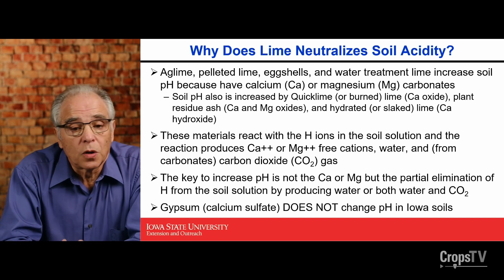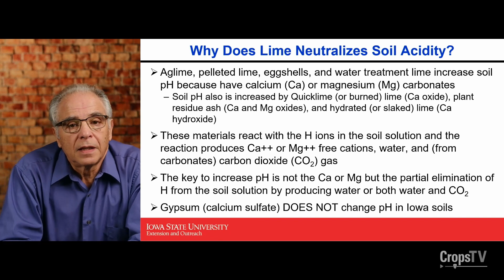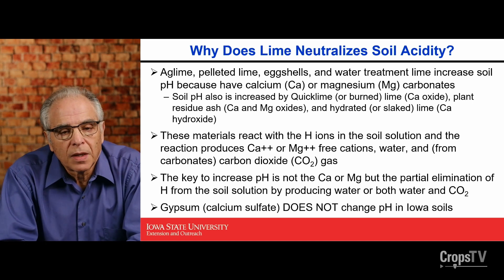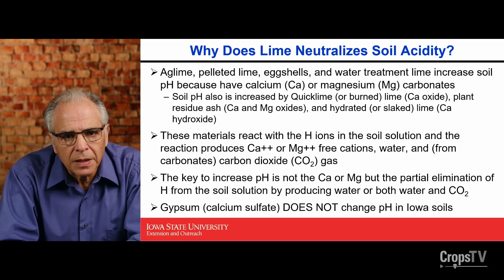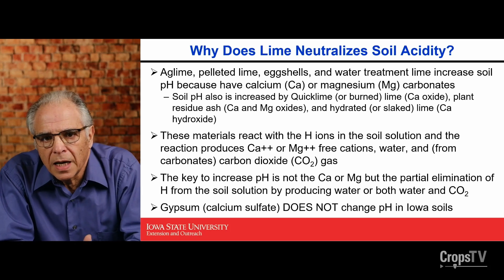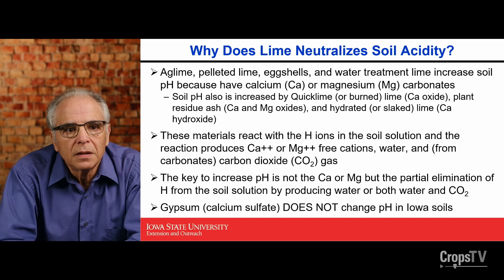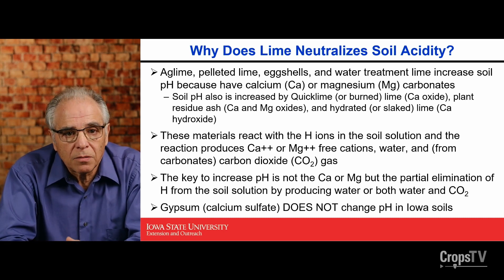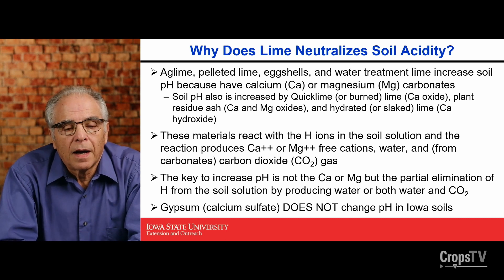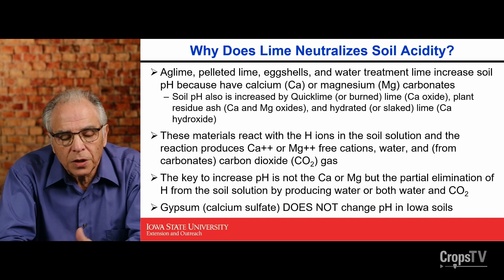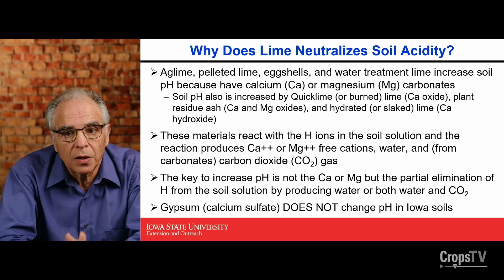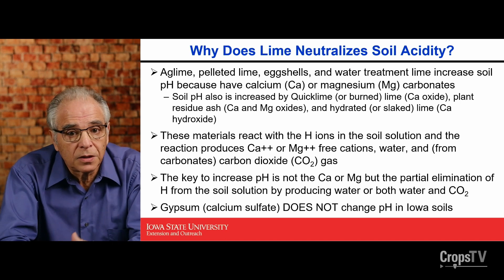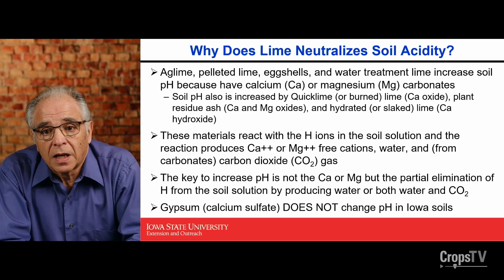Another important thing to remember is why lime or ag lime neutralizes soil acidity. Lime sources like ag lime, pelleted lime, eggshells, and lime from water treatment plants increase soil pH because they have calcium or magnesium carbonates mainly. Soil pH is also increased by quick lime or burned lime, plant residue ash that have potassium, calcium, magnesium oxides, and hydrated lime.